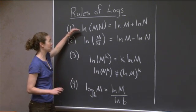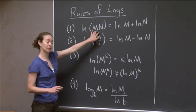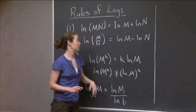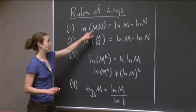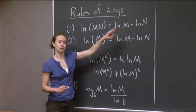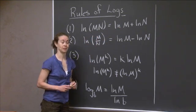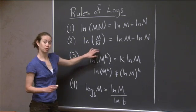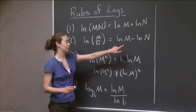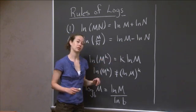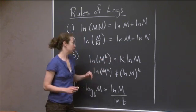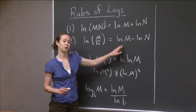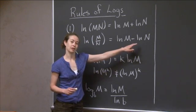The first rule says that the natural log of a product is equal to the sum of the natural logs: natural log of m times n is equal to natural log of m plus natural log of n. The second rule says the natural log of a quotient is equal to the difference of the natural logs: natural log of m divided by n equals natural log of m minus natural log of n.